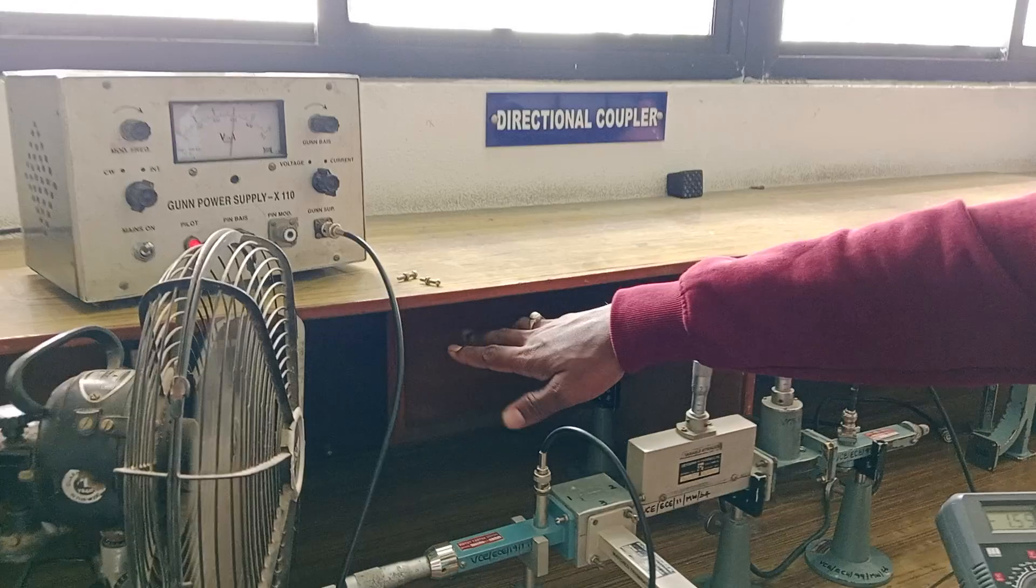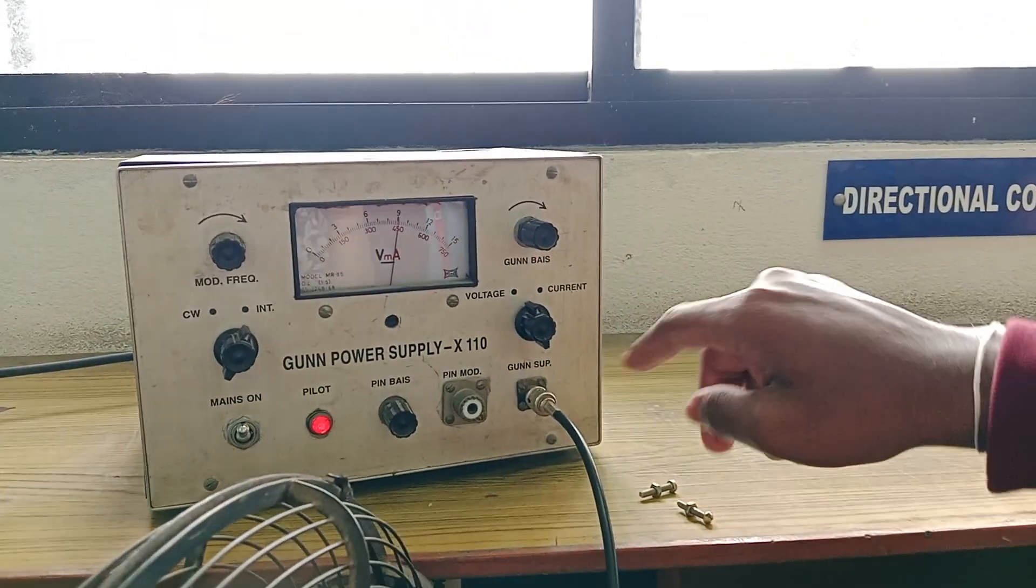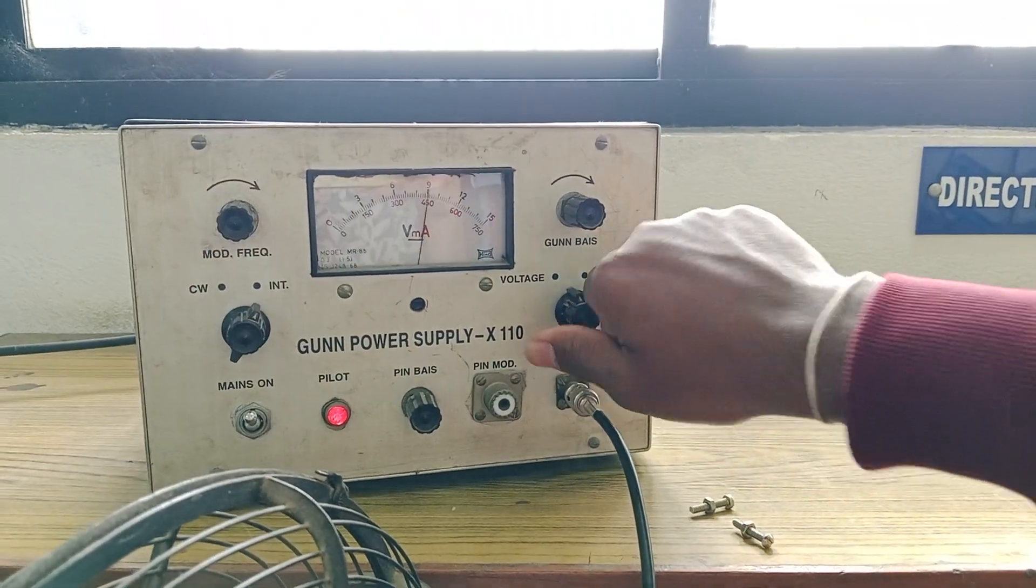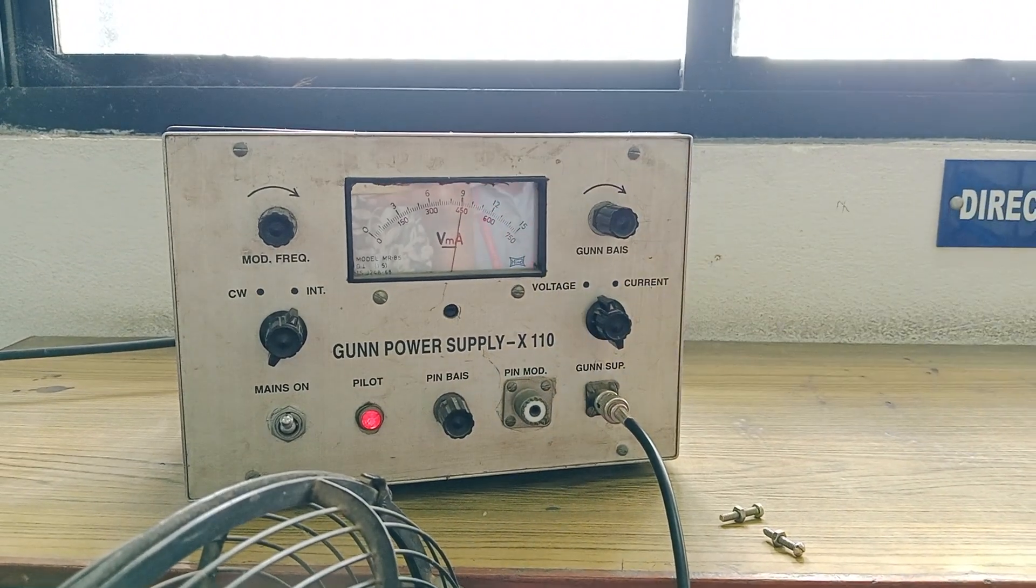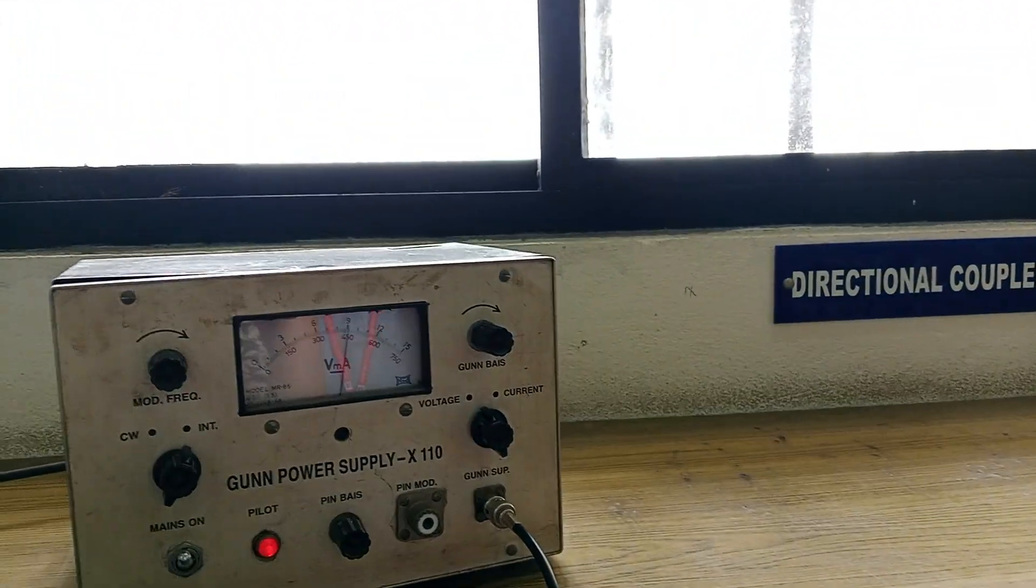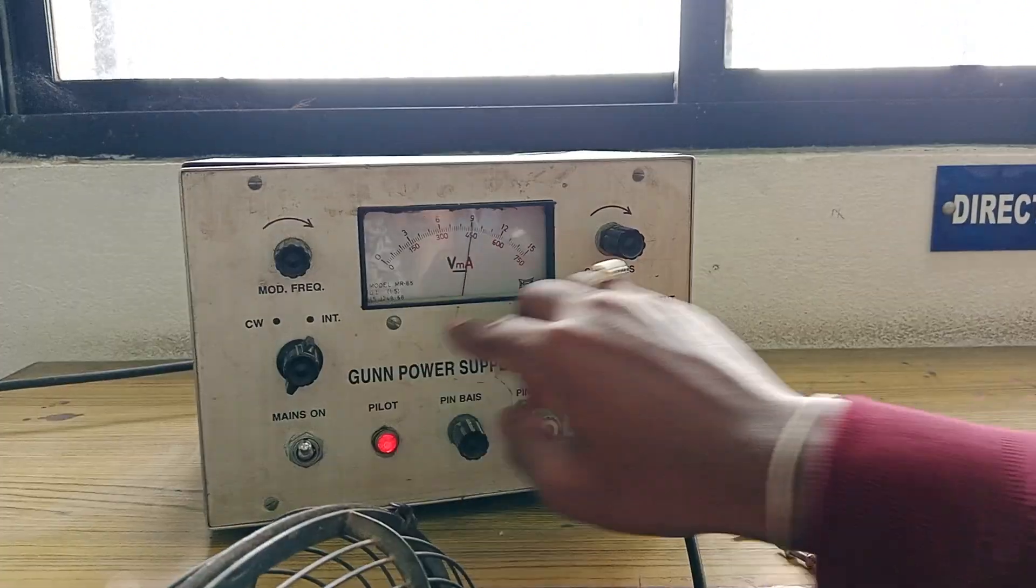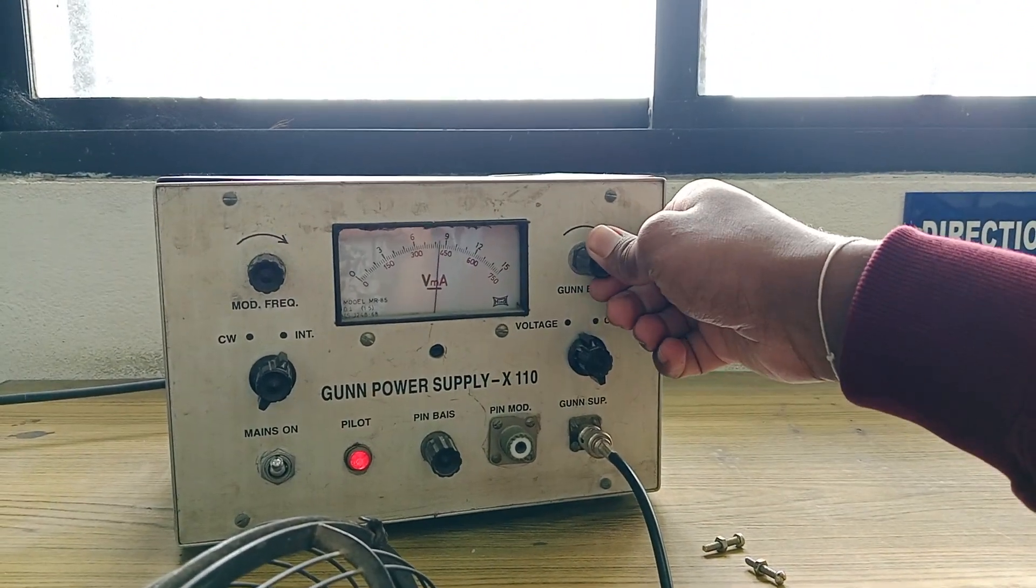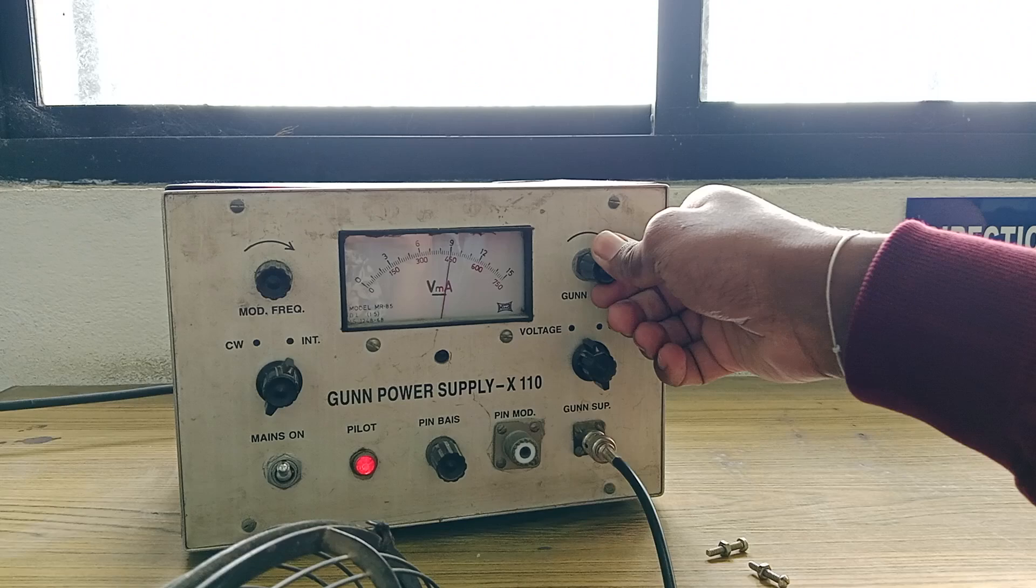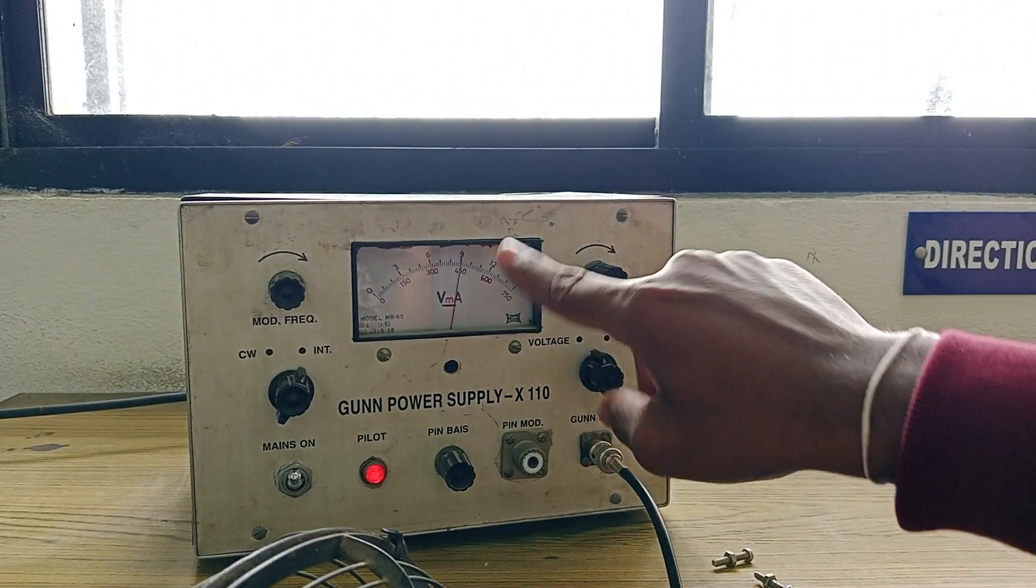Once you turn on the power supply, here you can see the Gunn power supply. You have to keep it in the voltage mode and keep it at 9 volts. Here you have gun bias varying knob. You have to vary it to get exact 9 volts.